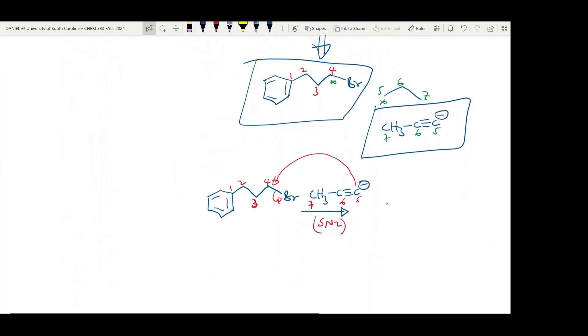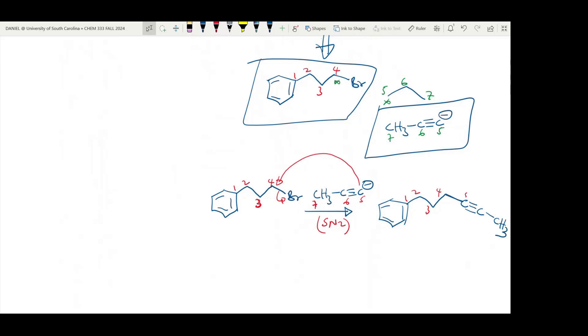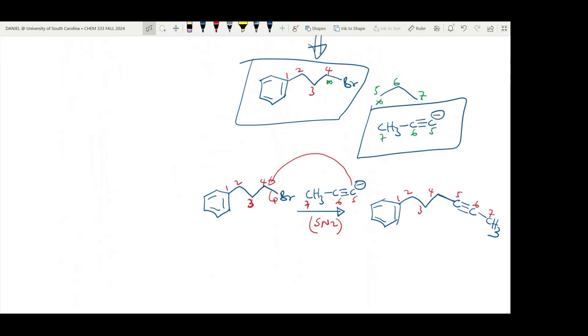The product we'll have will be where carbon 4 is going to form a bond with carbon 5. Carbon 5 is triply bonded to carbon 6, and carbon 6 is joined to this methyl group. So numbering this would be 5, 6, 7. It's a good practice to number your carbon atoms.